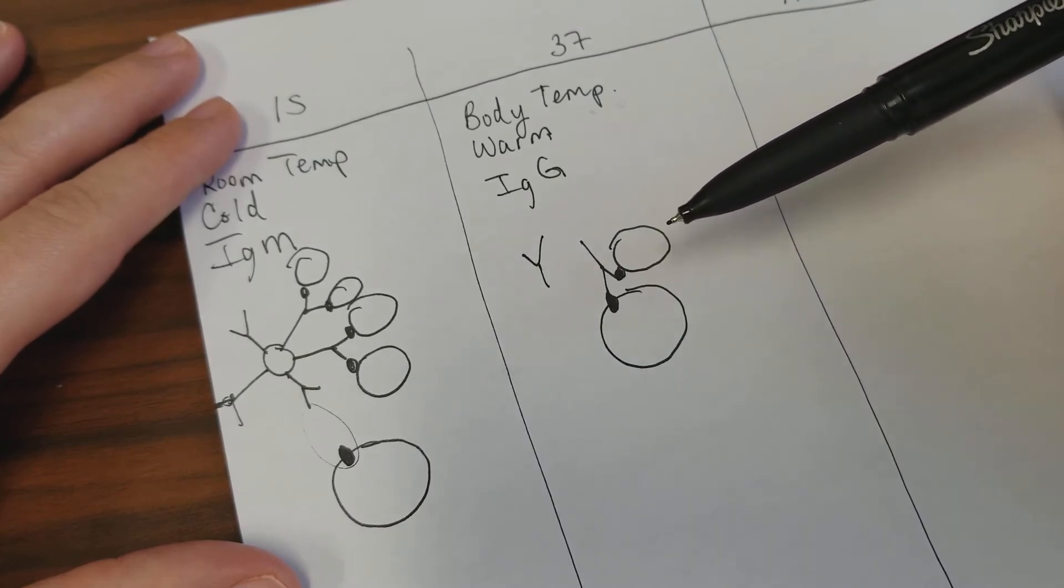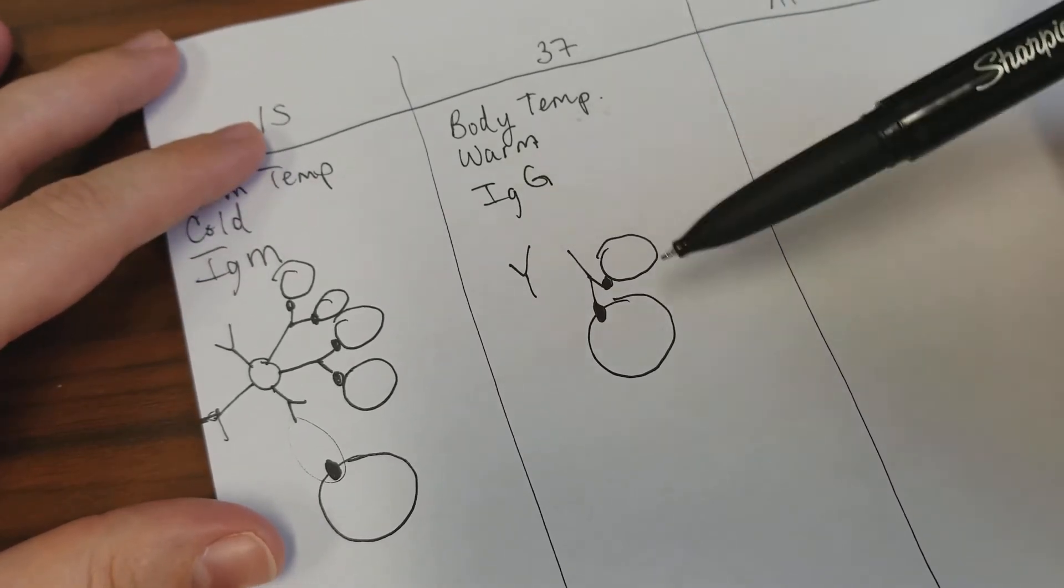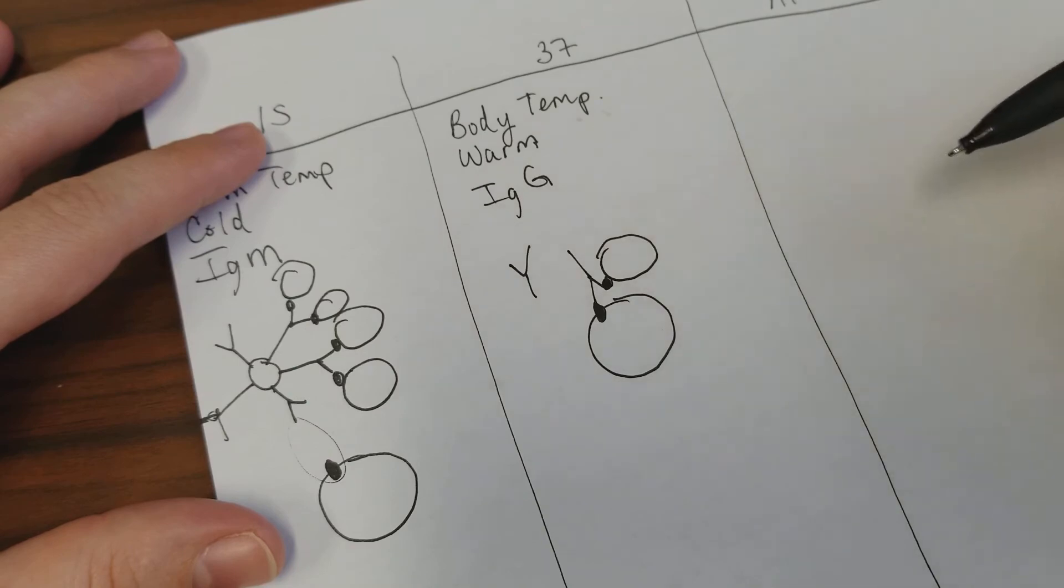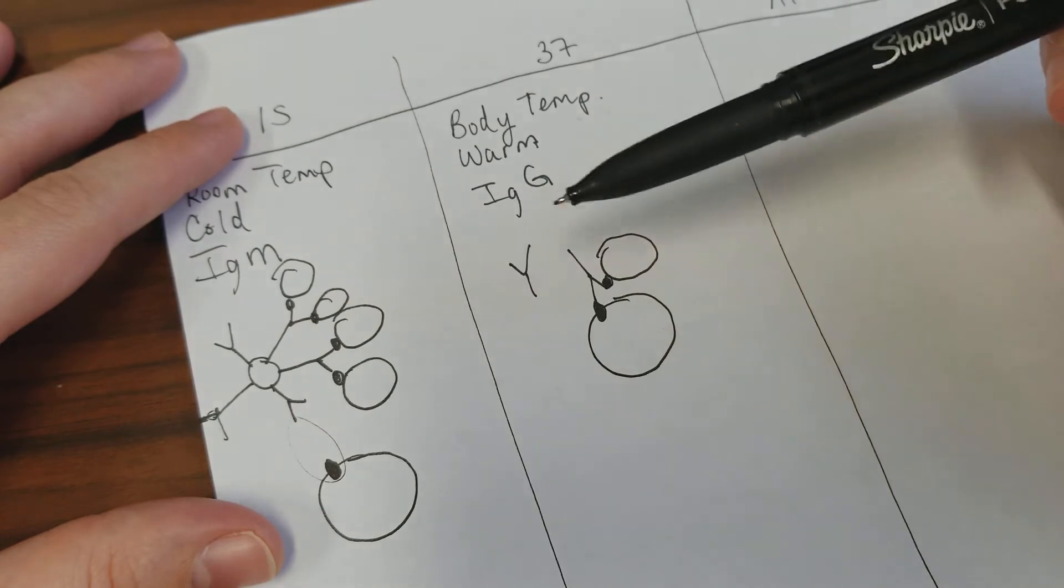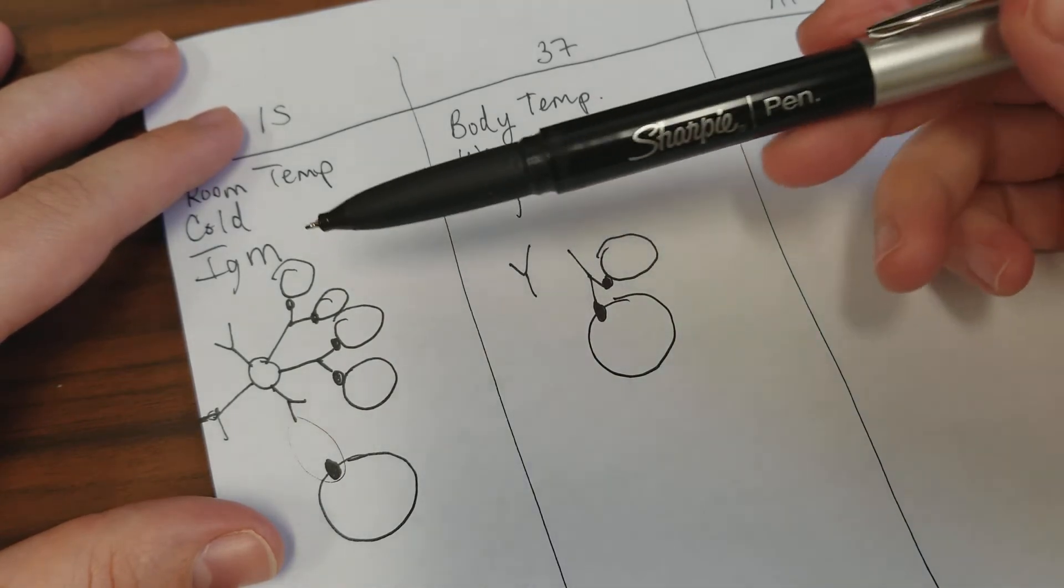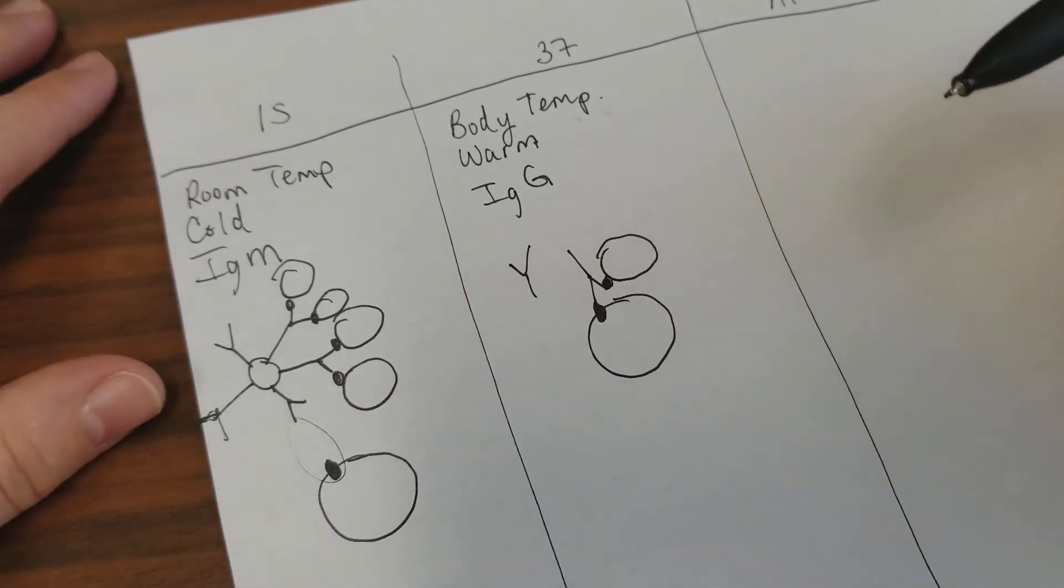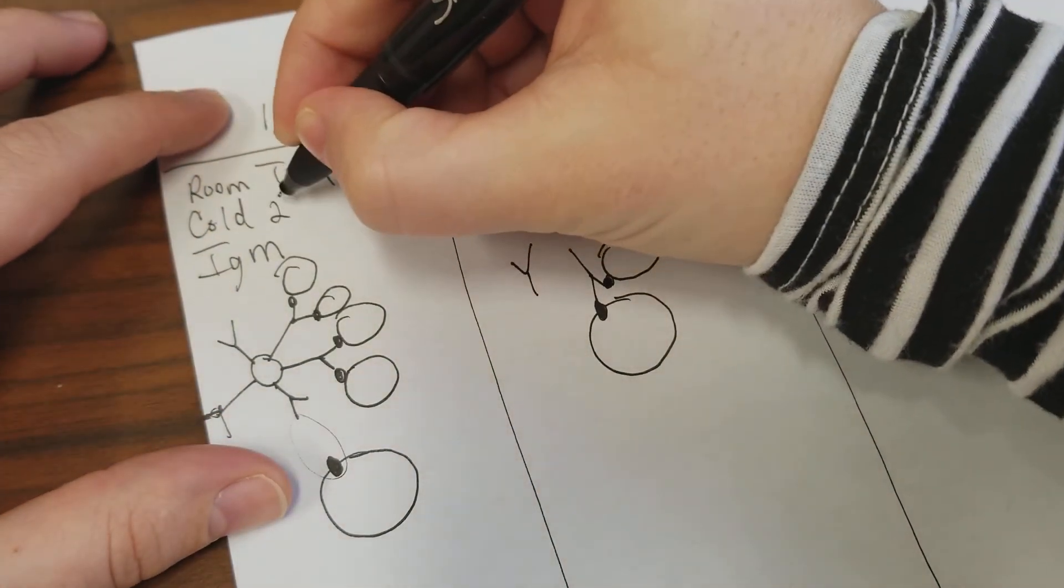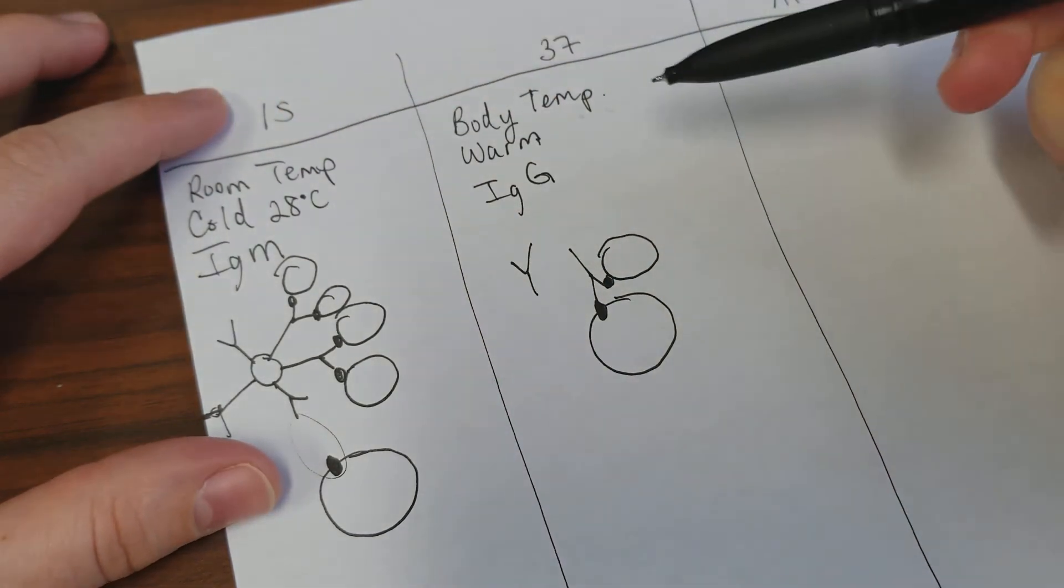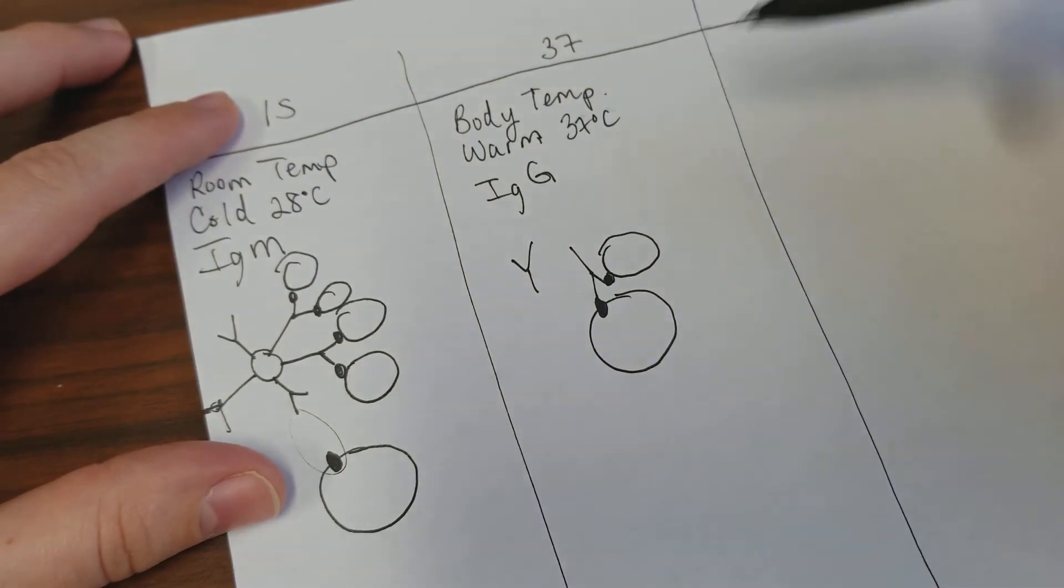We think of any type of antibody that shows up in 37 or AHG to be clinically significant. If we did have an IgM and it was present in 37, that would be a clinically significant IgM antibody. If it doesn't, then we're not really thinking it's clinically significant. It could just be something that's happening in vitro because of the temperature we're looking at. 28 degrees would be room temperature, and we're thinking of body temperature as being 37.